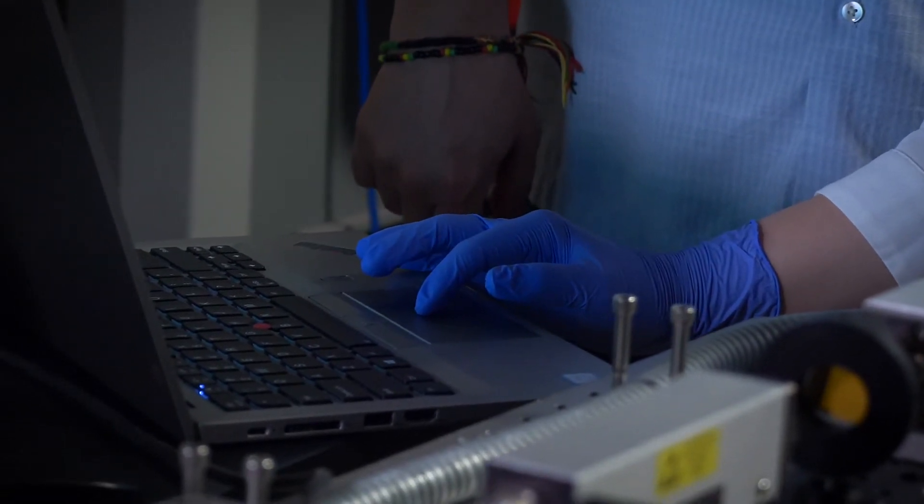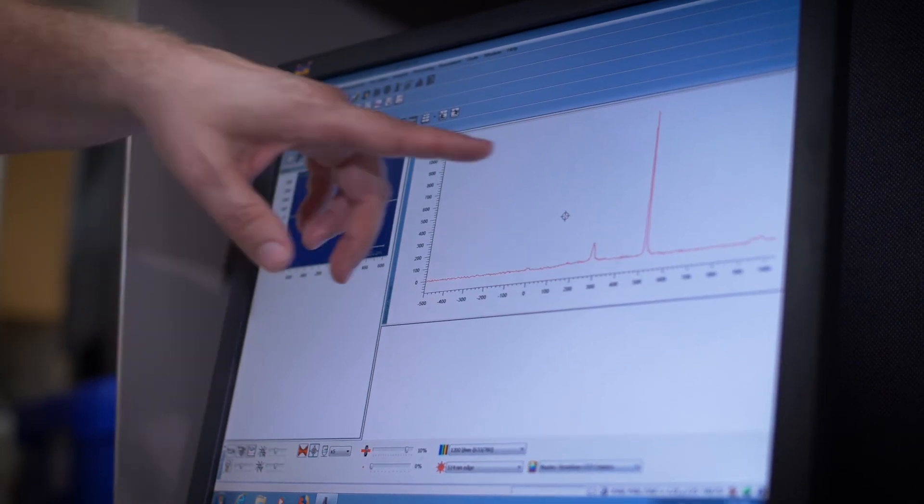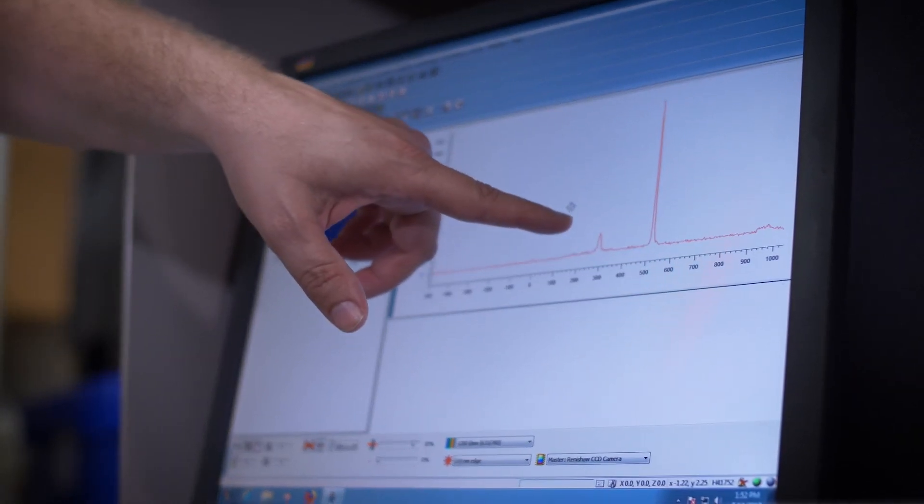So we put down this metamaterial and then we can do terahertz spectroscopy on it and we see a peak in the spectrum. Now if you put something else on top of that you'll see a shift in that peak and so this allows us to sense things.